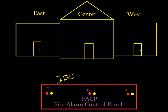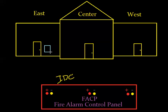This panel has three zones, and each zone is going to cover one area of the building. Let's imagine this is a very basic school with two devices per wing: a pull station by the door and a smoke detector on the ceiling.